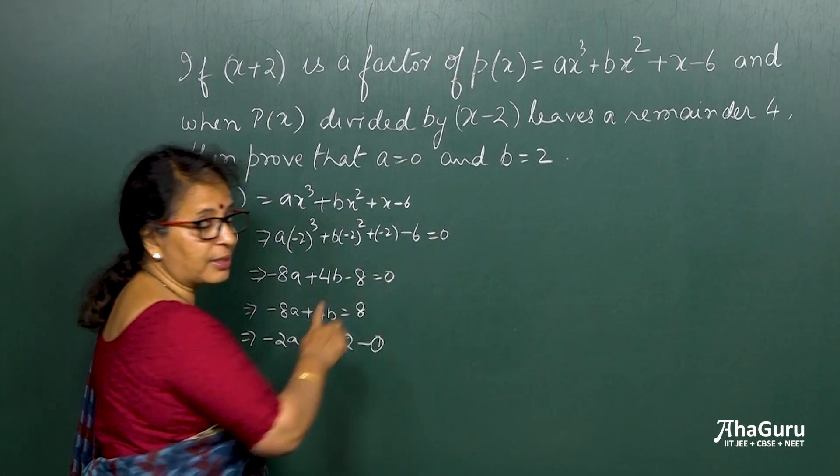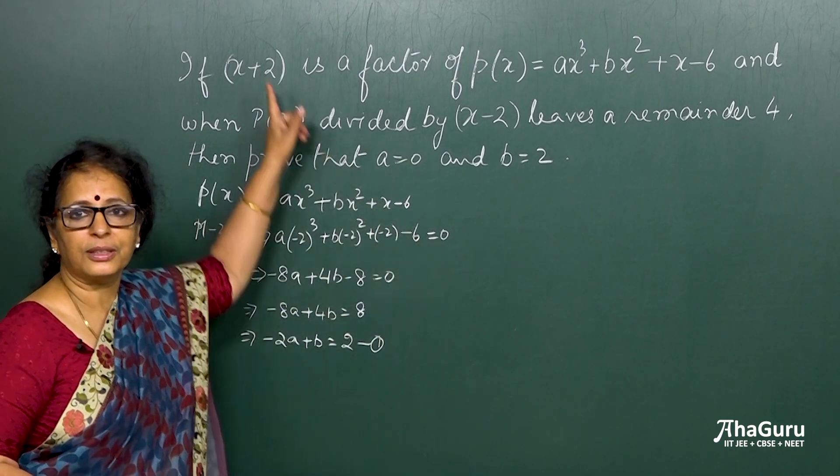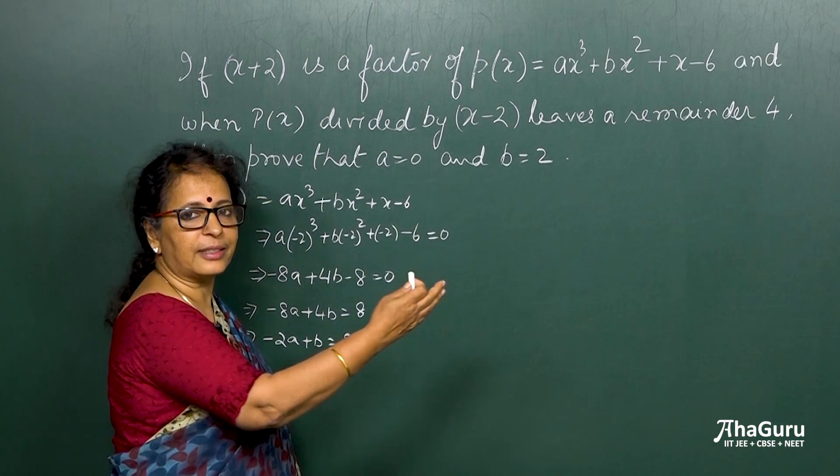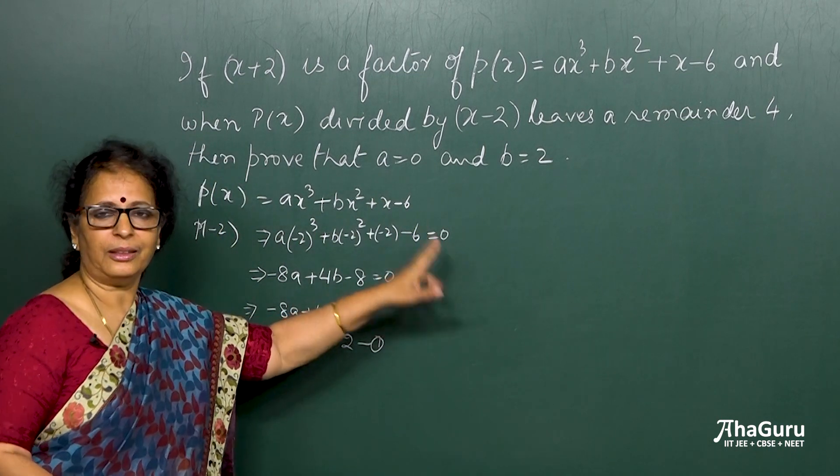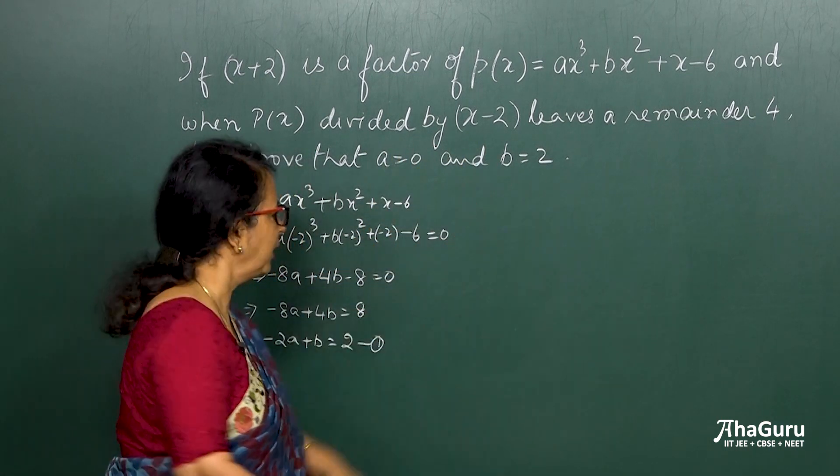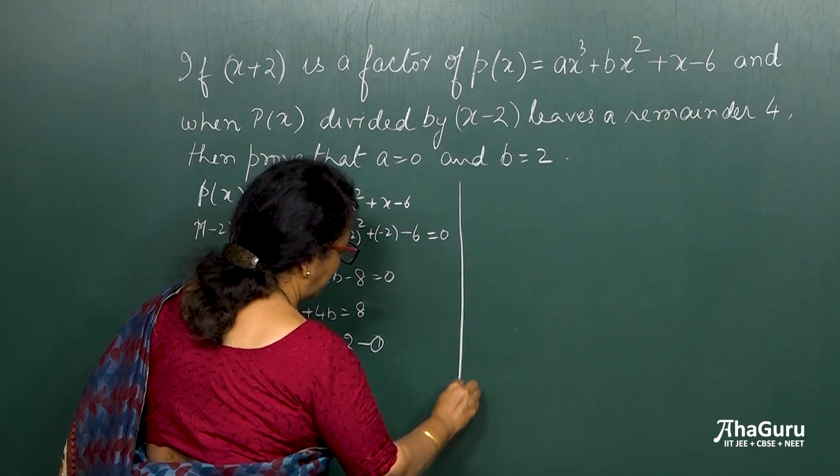And that is the reason why I have put a 0 here. The 0 has come because it is a factor. So obviously the same thing, I will not put a 0 here when it is a remainder. That is the only difference.